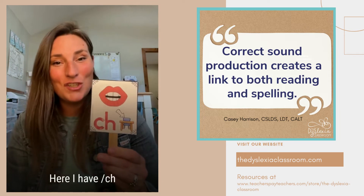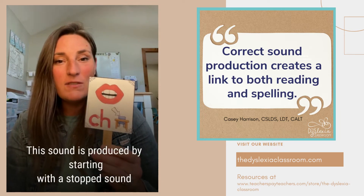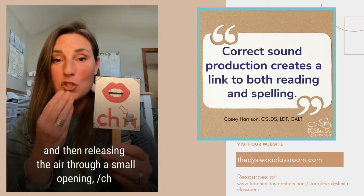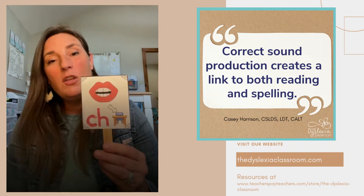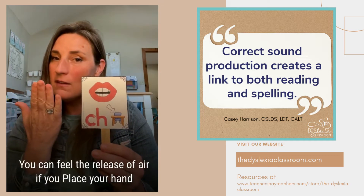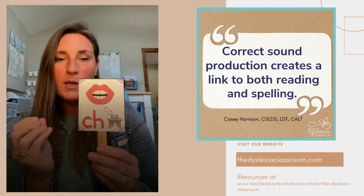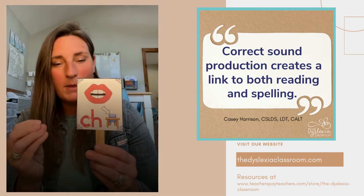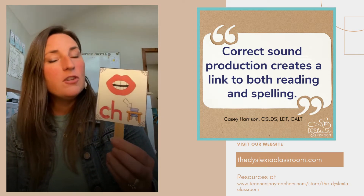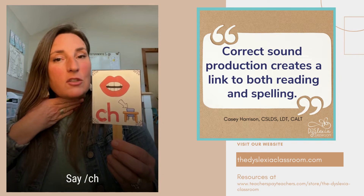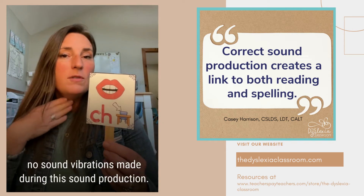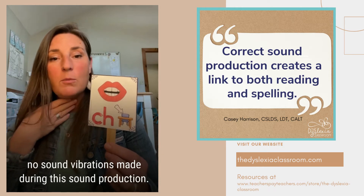Here we have ch. This sound is produced by starting with a stop sound and then releasing the air through a small opening — ch — which causes that friction. You can feel the release of air if you place your hand in front of your mouth: ch. It's a really quick release of air, and the sound is not going to be continuous — ch. Place your hand on your voice box and say ch, and you'll notice that this is an unvoiced sound.